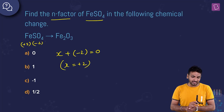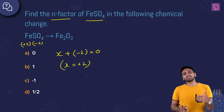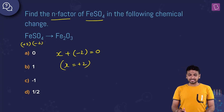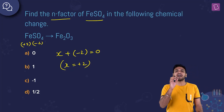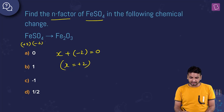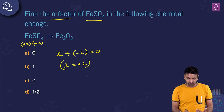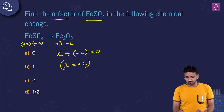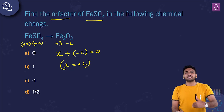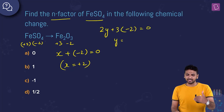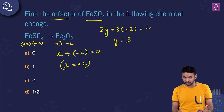Moving on to Fe2O3 on the product side: oxygen is −2 on both sides, so there's no change in oxygen's oxidation state. The only change comes from iron. Setting up the equation: 2y + 3(−2) = 0, so y = +3. Iron goes from +2 in FeSO4 to +3 in Fe2O3.